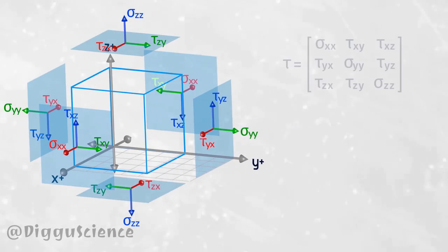These stress are often written in matrix form. All these stress values are known as the stress tensor.